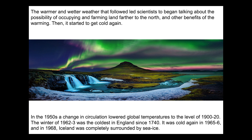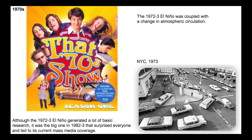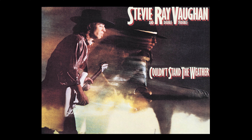In 1968 in particular, Iceland was completely surrounded by sea ice, essentially cut off from trade with the rest of the world. In the 1970s, another change in atmospheric circulation occurred. 1972 and 1973 were forced by El Niño — this is when the general public started to become aware of El Niño, though no one knew what it was. Research on it increased until 1982 and 1983, when a major El Niño event led people to ask, 'What's El Niño? Why is it ruining my stock portfolio?'